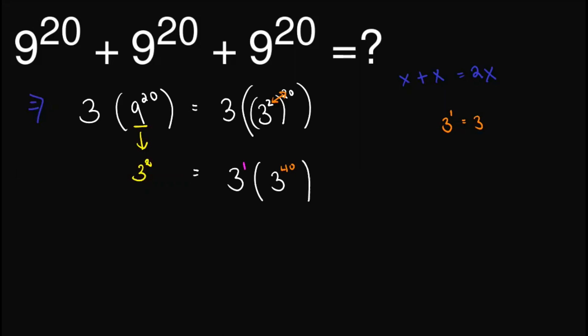Now by laws of exponents again, we simply add these two. So adding that will give us 3 raised to 40 plus 1 or simply 3 raised to 41. And that is the final answer for this one.